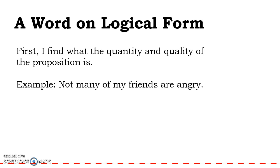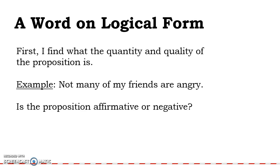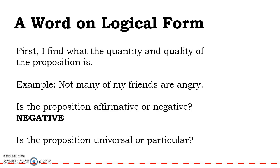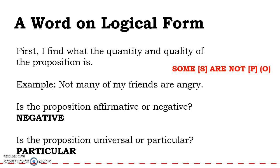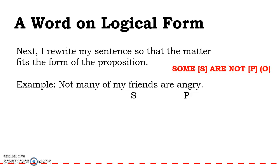Let's look at another example sentence: 'Not many of my friends are angry.' First we ask, is the proposition affirmative or negative? It is negative — we see the word 'not' in there. What about the quantity — universal or particular? The sentence says 'not many,' so that tells us we're dealing with the particular. Negative particular — that's our O form: Some S is not P. Next I have to rewrite: this is my subject term, this is my predicate term. 'Some my friends' — we already have a problem here.